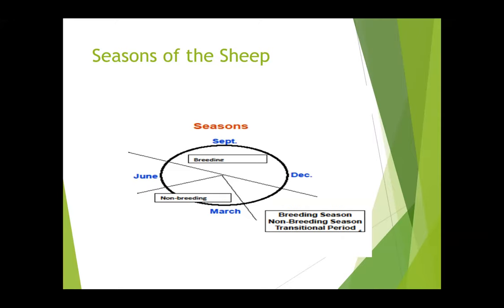The breeding season for sheep is dictated by when they want to lamb. Physiologically, for survival of offspring, everybody wants to lamb in the spring when the weather gets better and the grass is starting to grow. So for sheep with a five-month gestation, that means they truly want to breed ideally between mid-September and mid-December. The transitional period would be sort of June, July, January, maybe February, depending on the breed. And then what we would consider the out-of-season or non-breeding season here would be March, April, May — probably some of the three toughest months to get sheep pregnant.